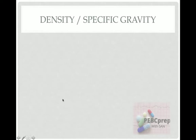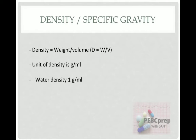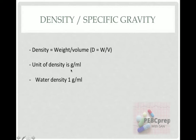The next topic in this lecture is density, or specific gravity. They will not ask the difference between density and specific gravity since they both have the same formula, so I put them together. You have to remember that density is weight divided by volume, the unit of density is grams per mL, and the density of water is 1 g/mL. For other liquids or substances, they will either ask for the density or provide it in the question.